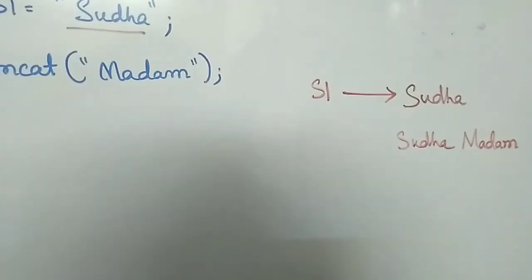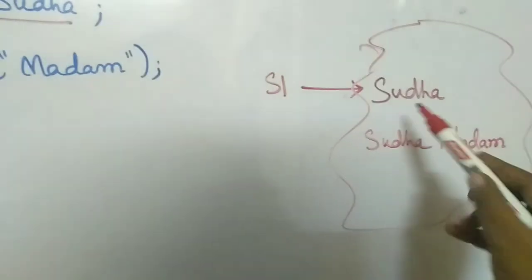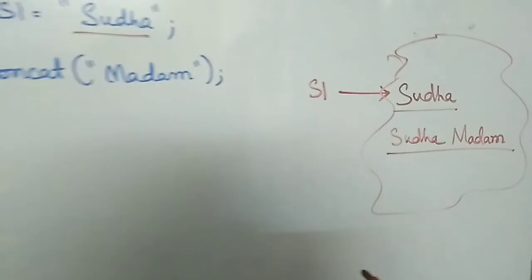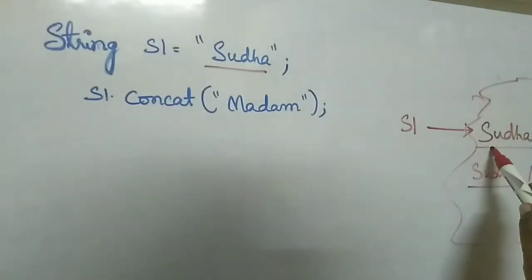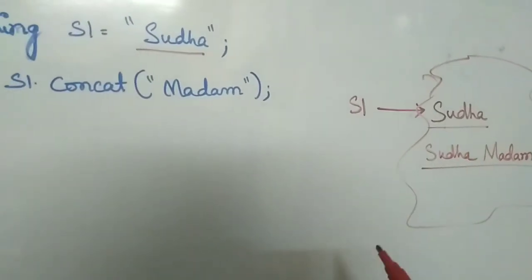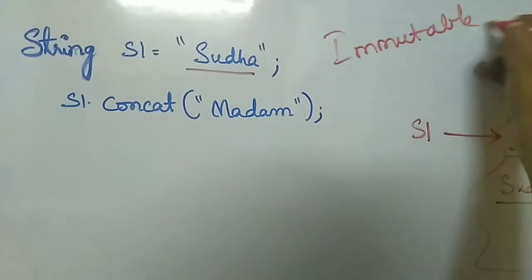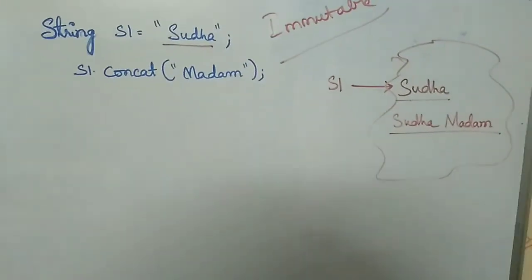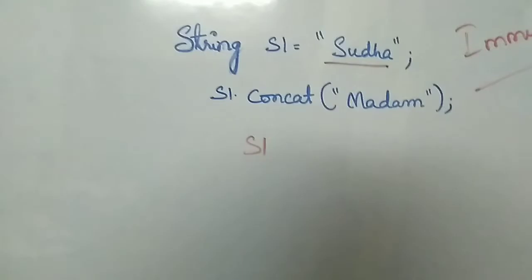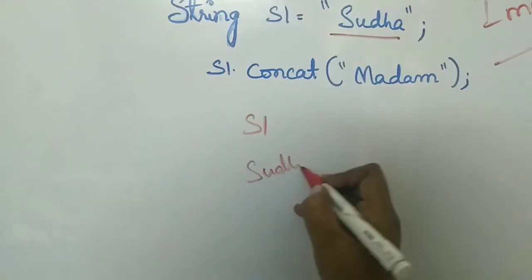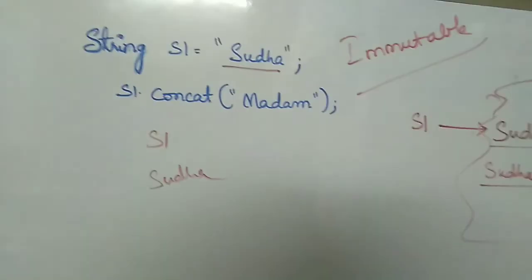Inside the heap you now have two objects: one is 'Sudha' and the other is 'Sudha madam'. No modifications were done to the previous string 'Sudha' — that is what is called immutable. Once an object is created, you cannot make changes to it. So if you try to print S1, the output will be only 'Sudha'.